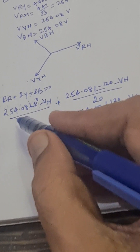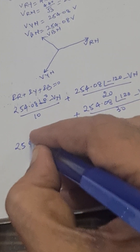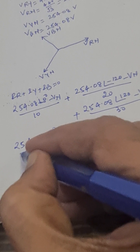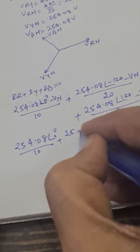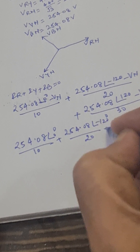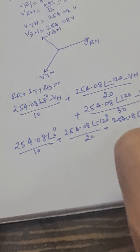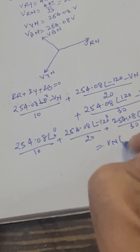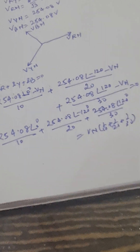We write: 254.08∠0° divided by 10, plus 254.08∠−120° divided by 20, plus 254.08∠120° divided by 30, equals VN times (1/10 + 1/20 + 1/30).